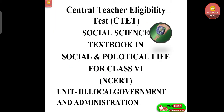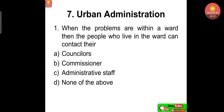Let's start today's class: Central Teacher Eligibility Test, Paper 2, Social Science, Social and Political Life, Class 6, NCERT, Unit 3, Local Government and Administration. We have already done two chapters, and the third chapter of this unit is Chapter 7, Urban Administration. Question number 1, practice questions.